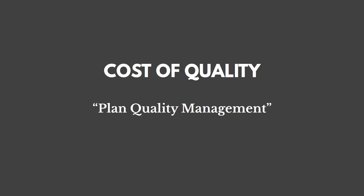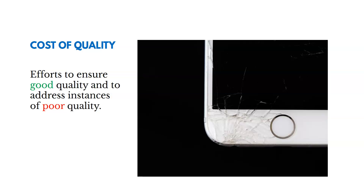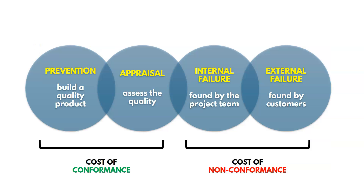Now let's talk about cost of quality. This is a tool in Plan Quality Management. The cost of quality covers efforts to ensure good quality and to address instances of poor quality. There are four types they want you to know: cost of conformance and cost of non-conformance. Cost of conformance includes prevention and appraisal — preventing a quality issue, building a great product up front, and then appraising or assessing the quality of our product.